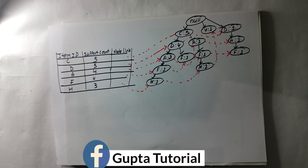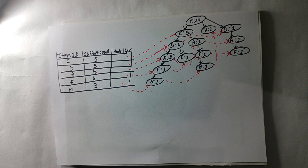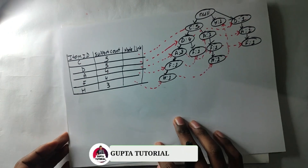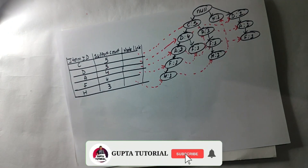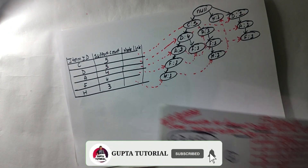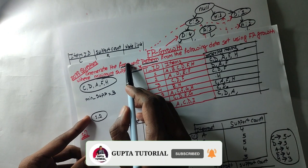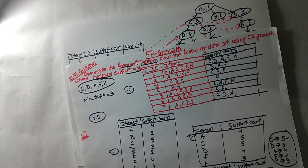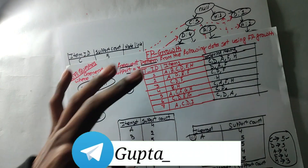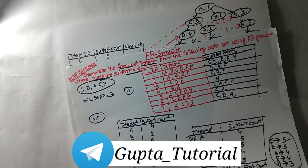Now we are going to go to the last and final pattern. We are going to continue. What is the frequency pattern? We are going to generate the frequency pattern. We are going to follow the three steps.